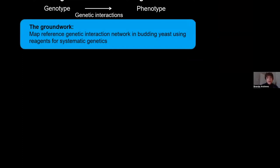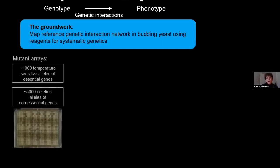Our approach is to lay the groundwork for a project where we might look at this in human cell lines by mapping a reference genetic interaction network in the budding yeast. We chose to do that because for many years there have been phenomenal reagents for doing systematic genetics available to the yeast community.